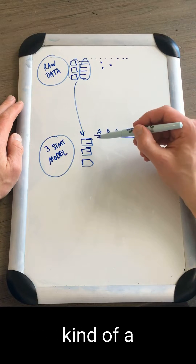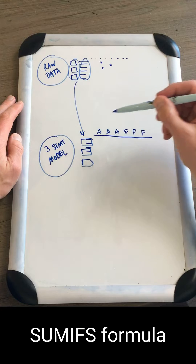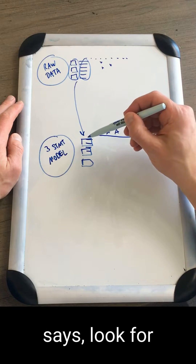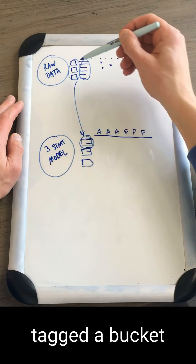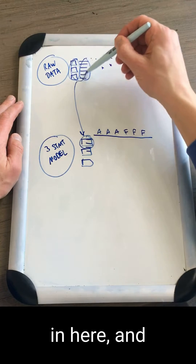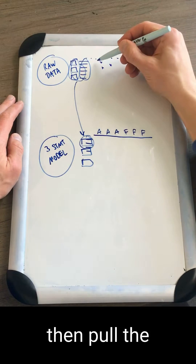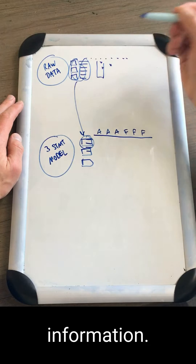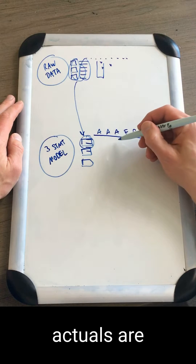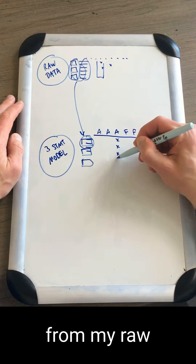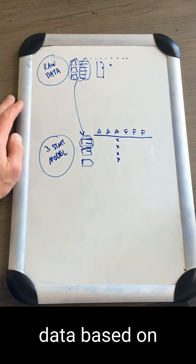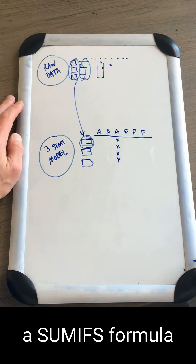I'm going to build a SUMIFS formula that looks for any place I've tagged a bucket and pulls the actual information, so my actuals are going to be populated from my raw data based on a SUMIFS formula.